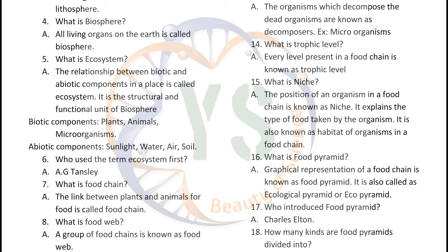Examples of abiotic components are sunlight, water, air, and soil. Who used the term ecosystem first? The scientist A.G. Tansley used the term ecosystem first.